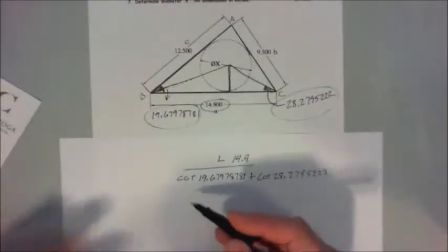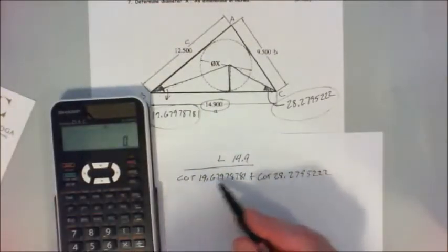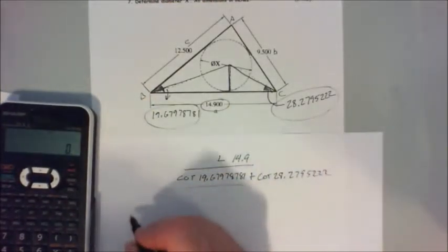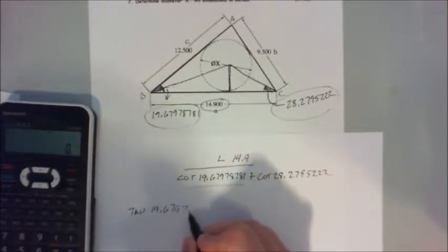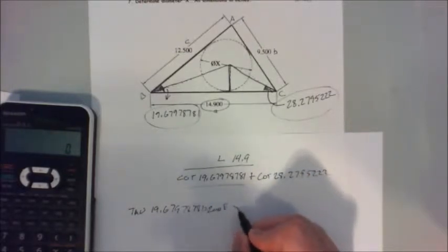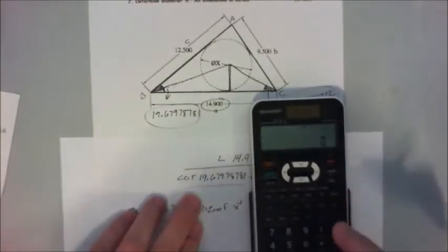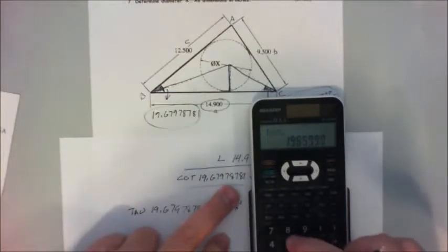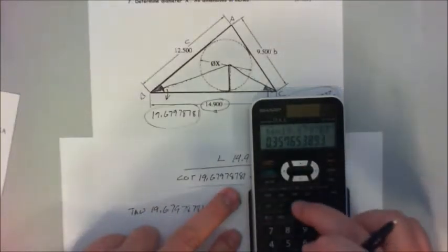I don't have a cot button on my calculator. There's no cot button. So how do I get this number here to anything? Cotangent is the inverse of tan. So we're going to go tan 19.6797878781 equals, and then second function 1 over, and then you have your function, 1 over, and then you have your answer.